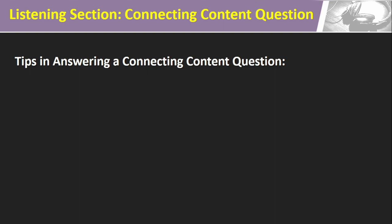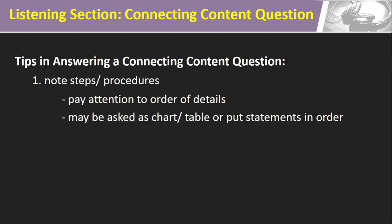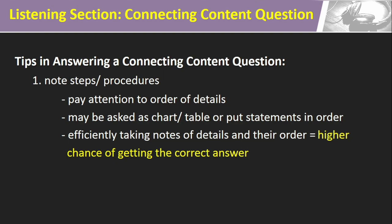It is time to learn about the strategies in answering a Connecting Content question. The first strategy is to note the steps or procedures that the speaker mentions. As you take notes of these details, be sure that you understand the correct order. A Connecting Content question usually appears as a chart or table, or may need you to put phrases or sentences in proper order. By being able to take notes of the details and the order as the professor mentions them, you'd have a higher chance of correctly answering the question.